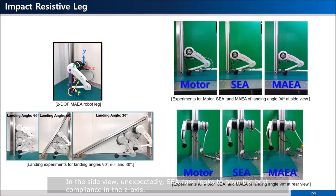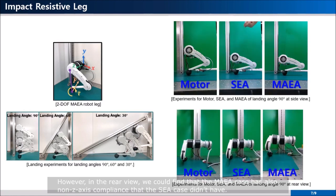Approximate impact resistance could be analyzed visually with slow video of landing experiments. In the side view, unexpectedly, SEA case looks to have the best compliance in the G-axis. However, in the rear view, we could find that the MAEA case has also known G-axis compliance that the SEA case didn't have.